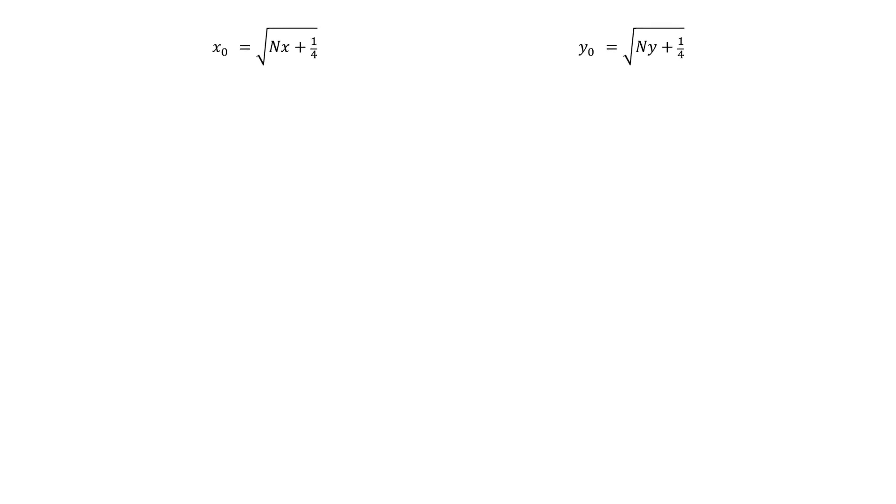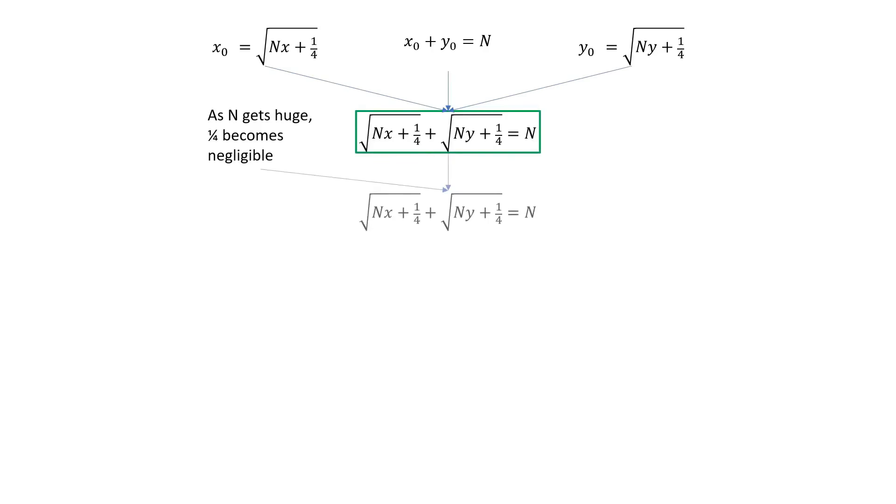But wait, why did we solve for x0 and y0? It was with the intention of getting rid of them, because remember the sum x0 plus y0 is cap N. So this is the exact solution for all n. But we are not done, because if n gets very large, the n times x is even larger, right? And that one quarter is negligible in comparison. So there is a sense in which we can cancel it out with impunity.